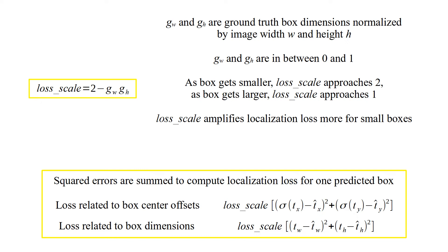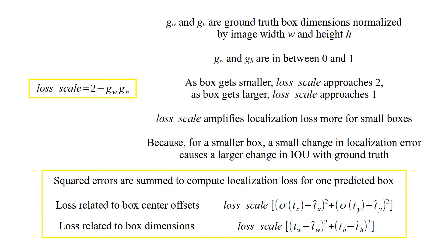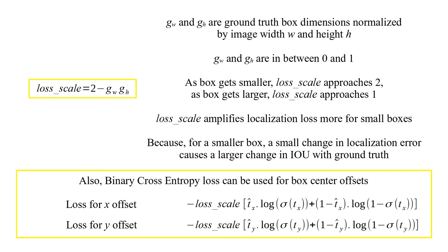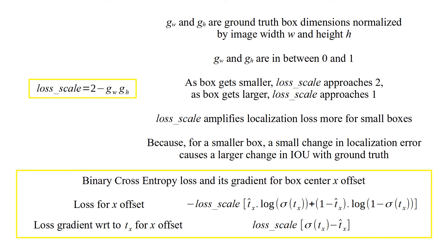LoadScale amplifies localization loss more for small boxes, because for a smaller box, a small change in localization error causes a larger change in intersection over union with the ground truth. Also, binary cross entropy loss can be used for box center offsets. These are the loss components for x and y offsets, and these are the binary cross entropy loss and its gradient for x offset.